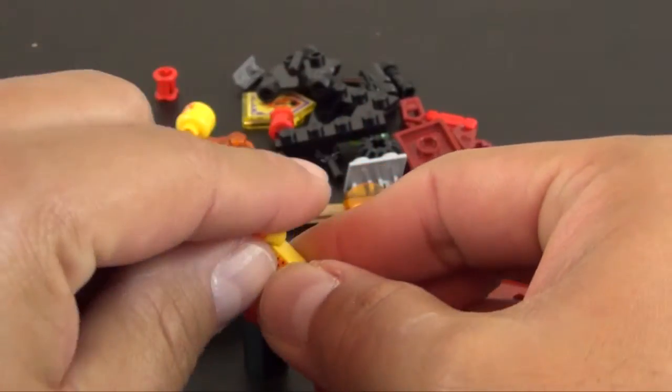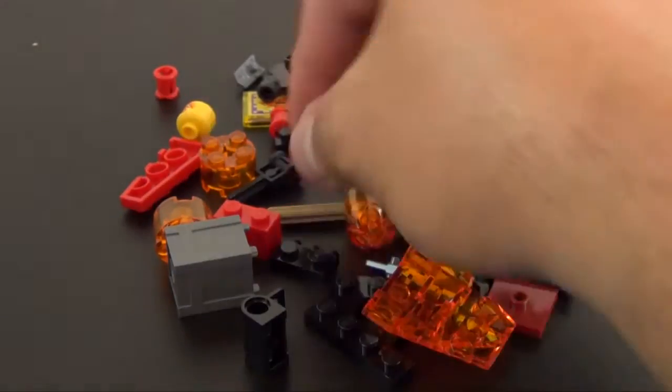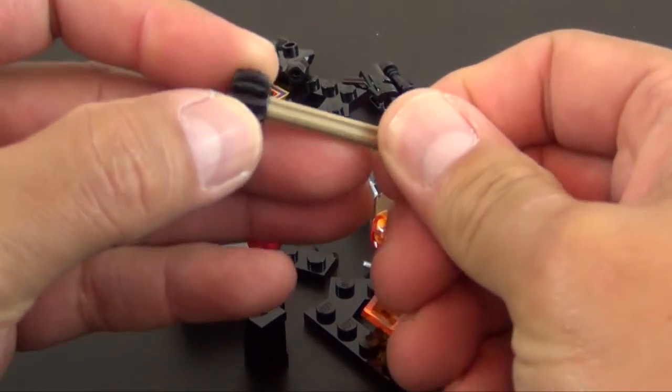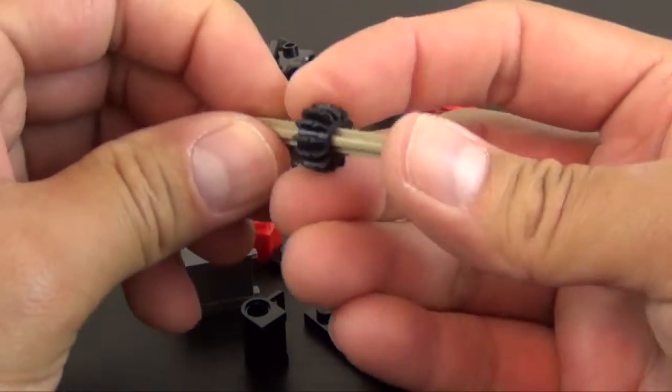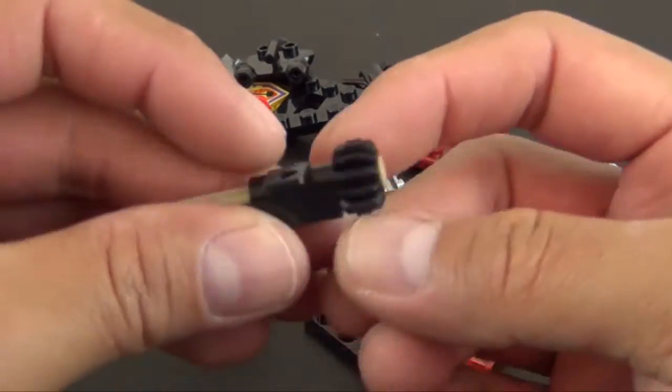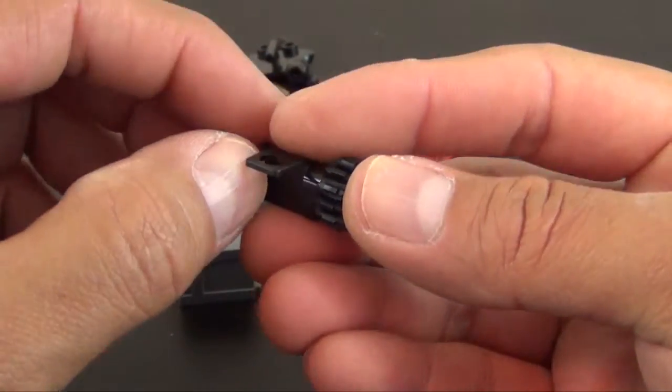Next, we're going to build part of the backpack slash weapon. Then it goes into this piece that has the neck bracket. So that's what's going to go on the torso.